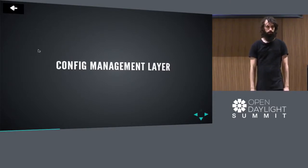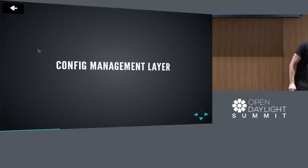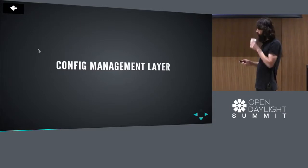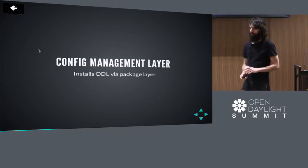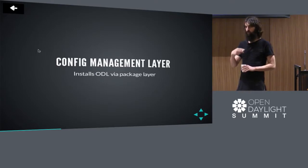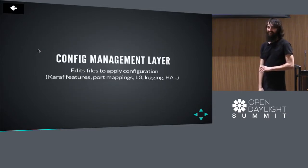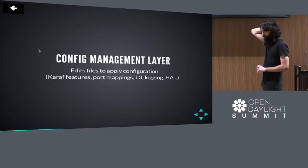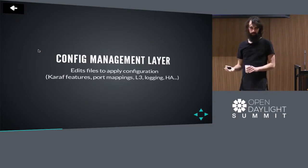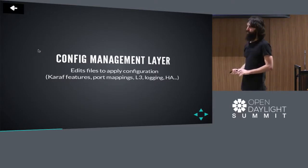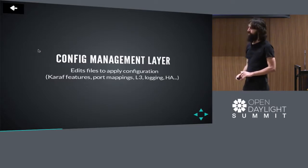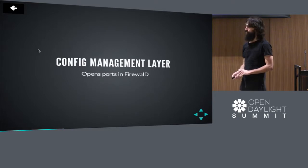That's it for the package layer. Layer two of our made-up OSI model is the config management layer. It consumes ODL via the packaging layer — we're trying to be good software engineers and get some reuse by building abstractions. The main responsibility of the config management layer is it edits files to apply configuration. The main ones we care about in OpenDaylight's use case are the Karaf features installed at boot, port mapping (which you typically have to edit to avoid conflicts with OpenStack Swift), configuring or disabling L3, setting various log levels, and deploying in HA or not. Shout out to OPNFV for driving all those knobs.